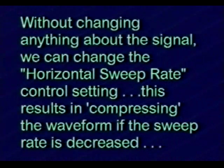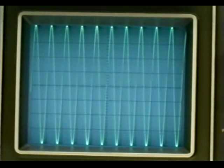Without changing anything about the signal, we can change the horizontal sweep rate control setting. This results in compressing the waveform if the sweep rate is decreased. Even though the signal looks completely different at the various horizontal sweep rate control settings, you need to realize that the frequency is constant. We're just changing the way it's displayed by varying the scope settings.